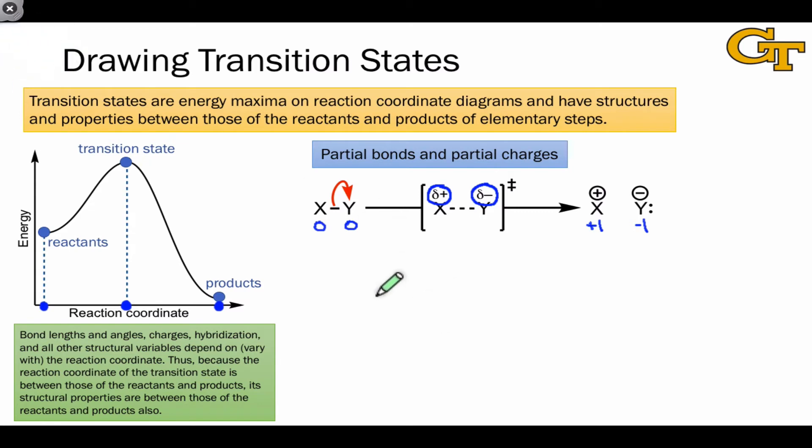Notice here also what's happening to the X-Y bond. We're going from a bond order of 1, in other words a single bond in the starting material, to a bond order of 0 in the products where X and Y are no longer connected.